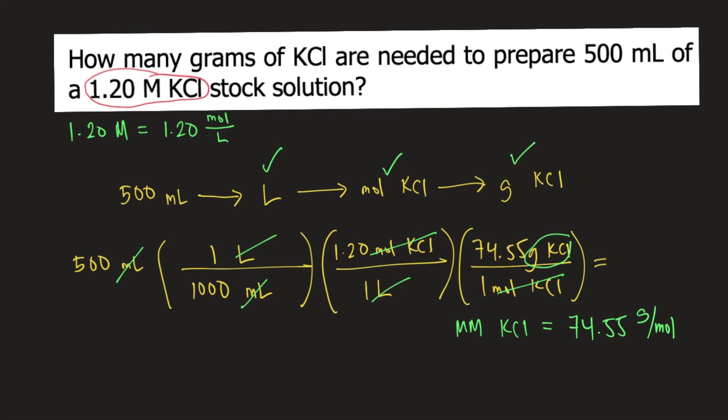So we're done setting up our equation. The last thing we need to do is to plug the numbers in our calculator. And if you solve this, this is equal to 44.73 grams of KCl. And this is the answer to the question.